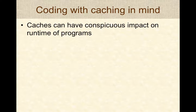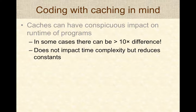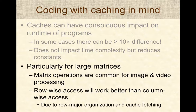Caches can have a conspicuous impact on program runtime — in some cases there can be a 10x difference in overall runtime just by restructuring the program slightly. Keep in mind that caching does not affect the time complexity or big O of an algorithm, but reduces the runtime constants. Caching has a particularly significant impact when operating with large matrices, which are common in image and video processing.